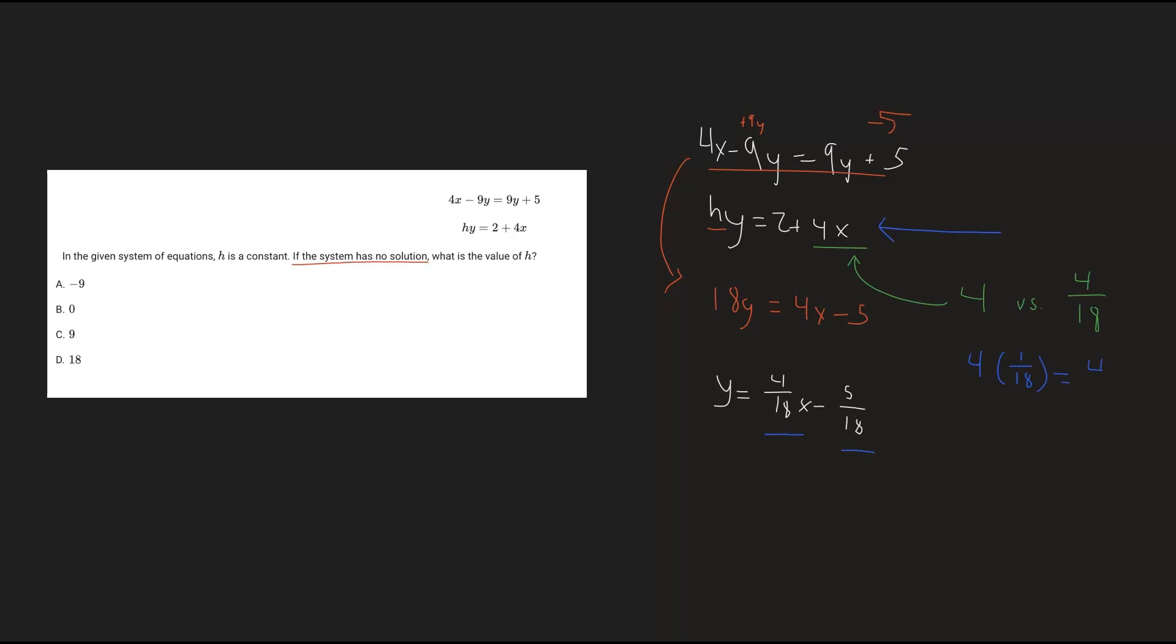And therefore, that will give us 4 over 18. And so how do we multiply 4 by 1 over 18? Well, that's the same thing as dividing 4 by 18. And we know that in order to divide this 4x, the h value will have to represent that.